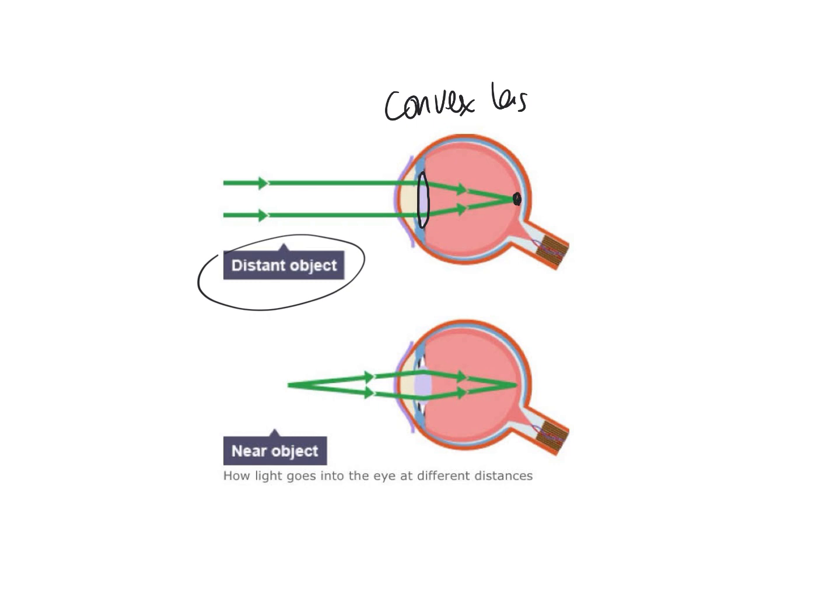If the object comes closer, the light rays are no longer parallel. So they come out like this. Therefore we need a thicker or stronger lens to focus the light. So the muscles in your eyes adjust the size of that lens so that the light rays are now bent more and focused still at the same point. That's how the eye would work normally.